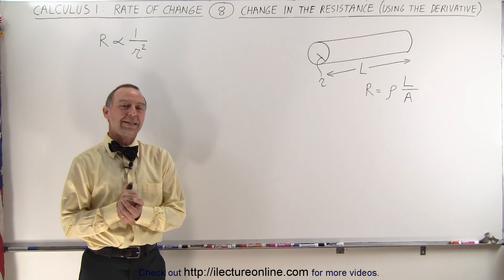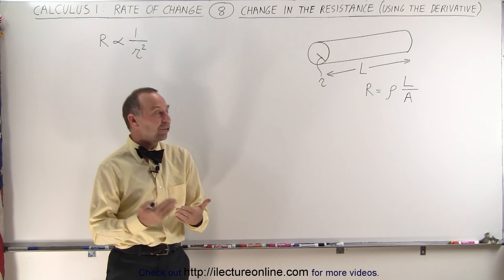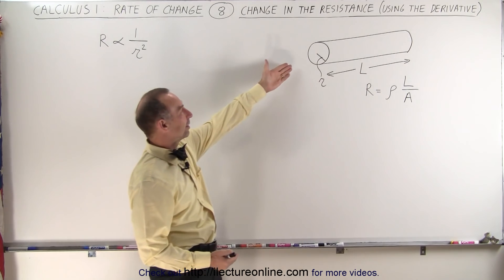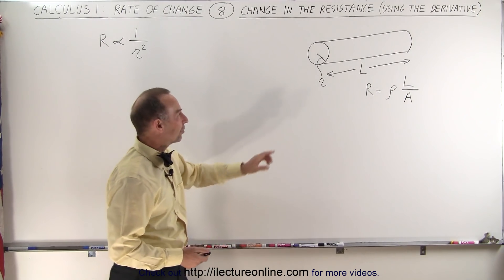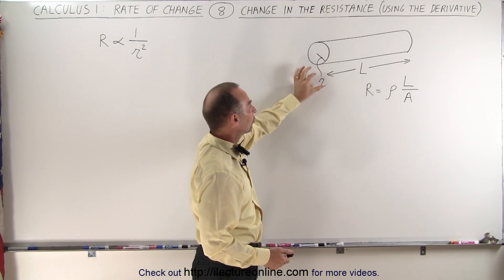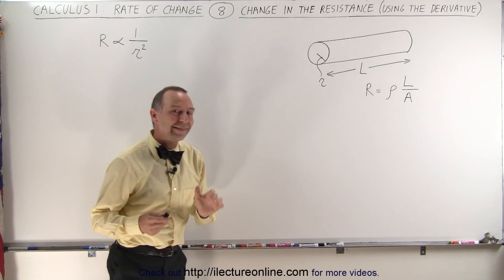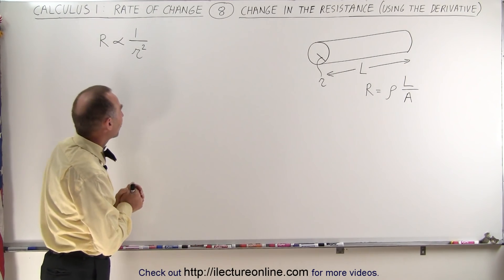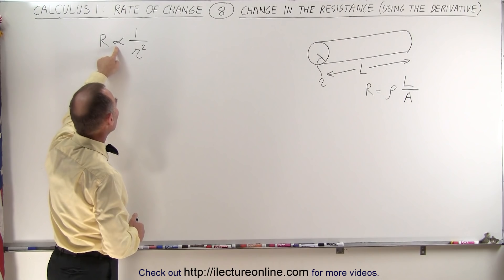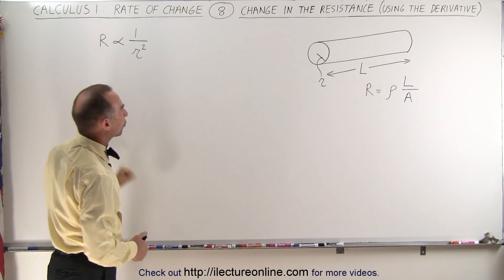Welcome to Electronline. Assuming we have a cylindrical resistor — here we have a drawing of one that has the length L and the radius small r — we can then say that the resistance of that resistor will be proportional to one over the radius squared.